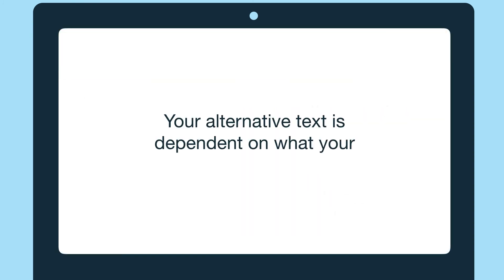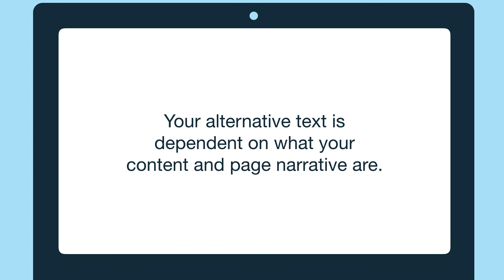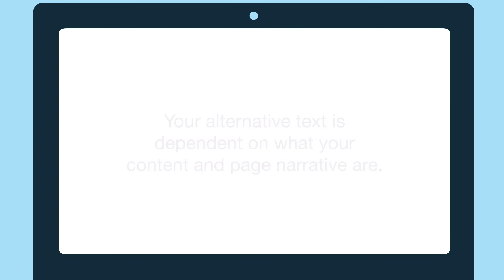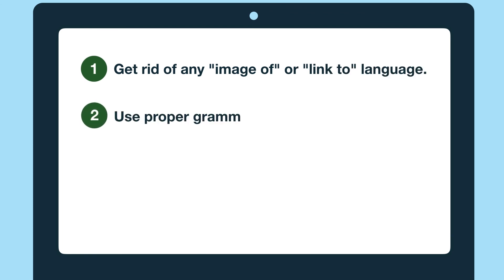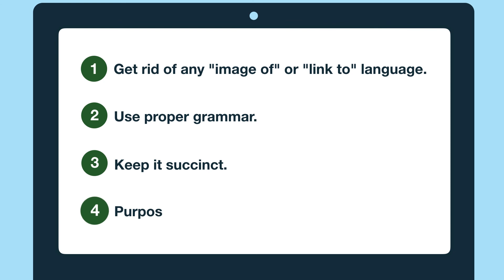One last time, the four tips to writing great alternative text are: get rid of "image of" or "link to" language, use proper grammar, keep it succinct, and purpose, purpose, purpose. You're ready to write great alternative text.